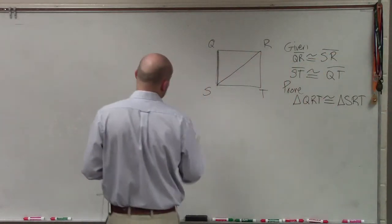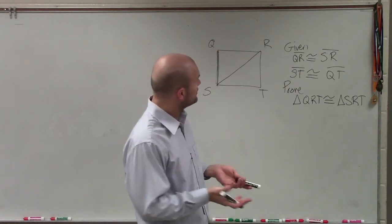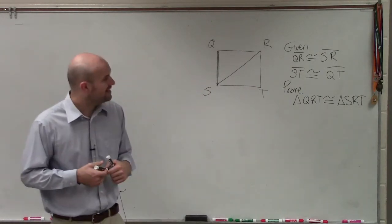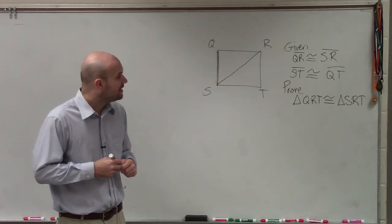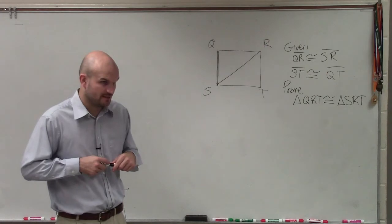So ladies and gentlemen, to write a proof for this, what we have is we have a figure QRST. And we are given QR is congruent to SR, ST is congruent to QT, and prove triangle QRT is congruent to triangle SRT.